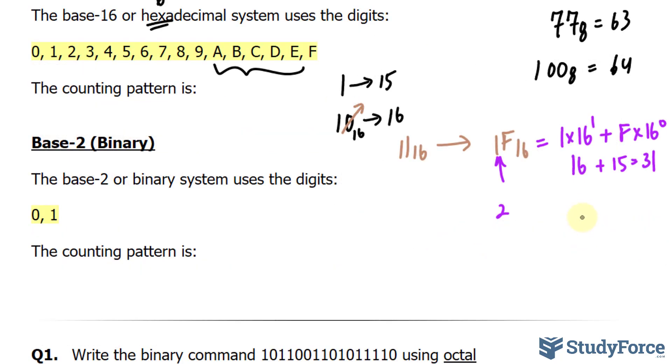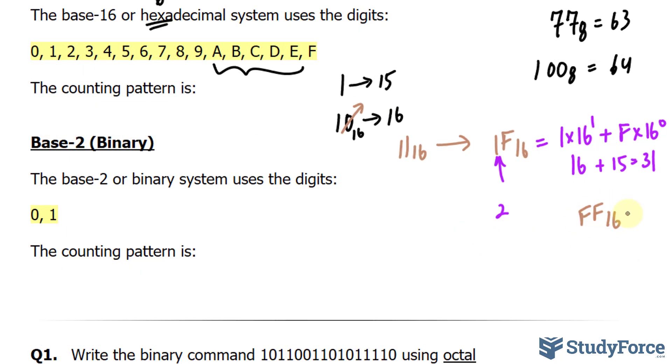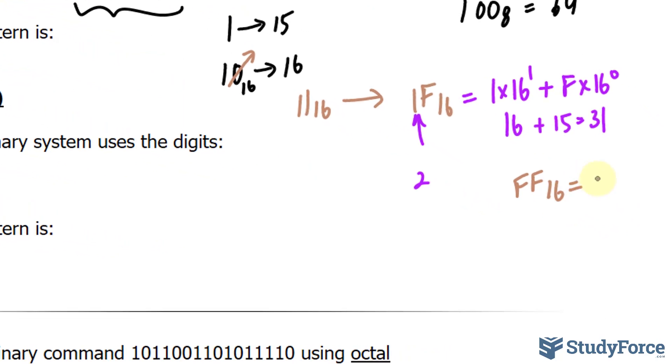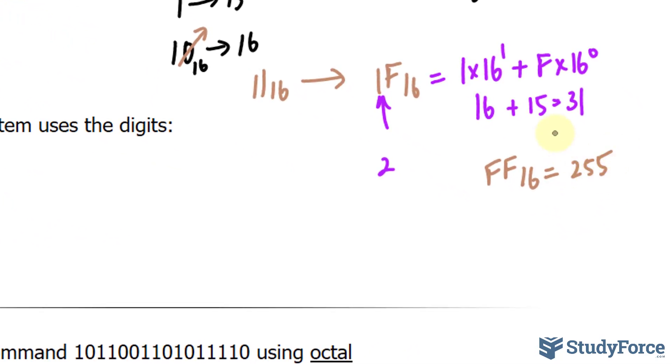Eventually we would reach f, f sub 16, and if you do the math, this is equal to 255. So naturally you would introduce a new place value after that, where we've maximized how much we can introduce in two place values. We would write down 1, 0, 0, sub 16, and that would equal to 256. Then this would change, and so on.